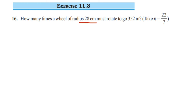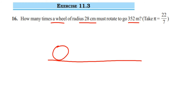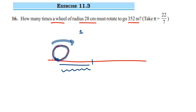What they are asking is: there is a wheel whose radius is 28 centimeters and how many times does it have to rotate to cover 352 meters? Suppose this is a wheel and this is a path. When the wheel rotates, it covers the entire circumference. The tire moves and covers the circumference of the wheel, which is nothing but the distance covered in one rotation.